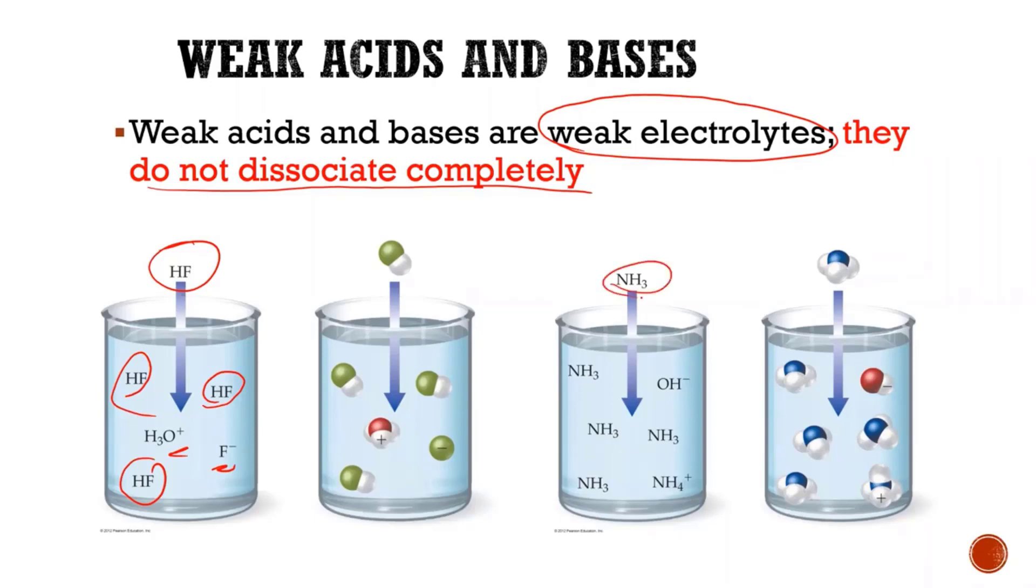If I look ammonia, if I throw that in water, I produce some hydroxides and some ammoniums. But most of it is the molecule ammonia. So only a few ions are present. So again, this is a weak electrolyte. Why? Ammonia is a base, but it's not one of the six strong. It's a weak one.